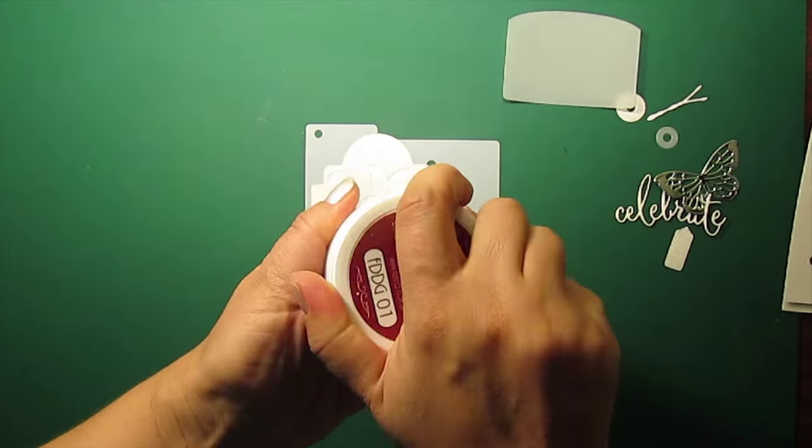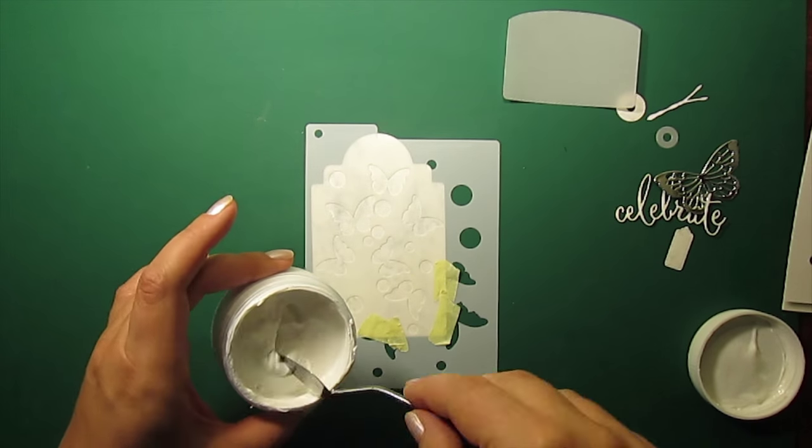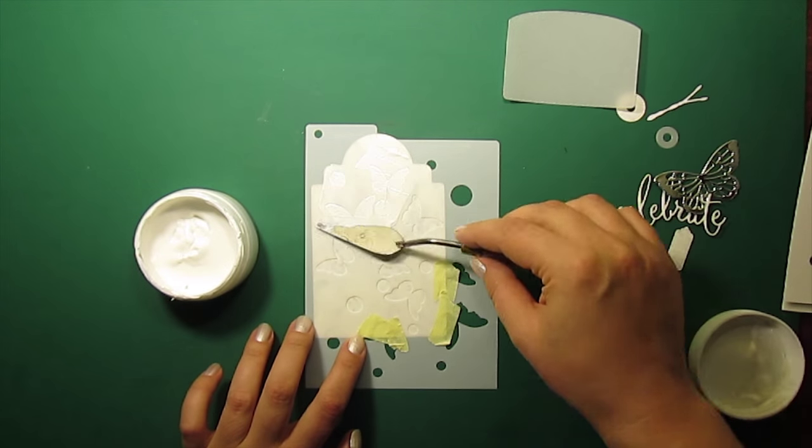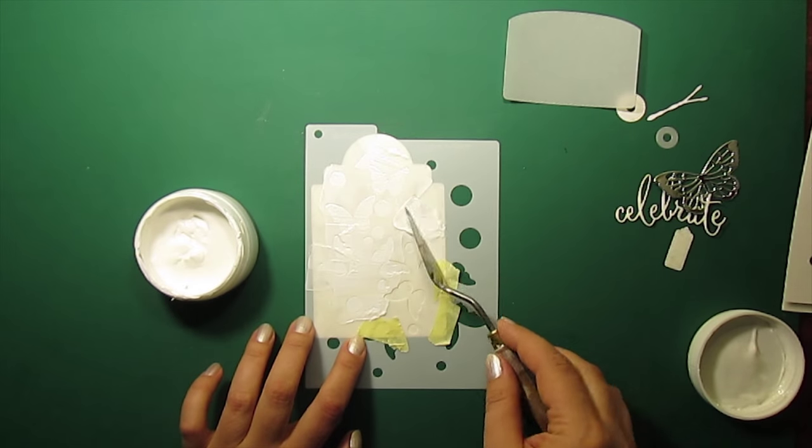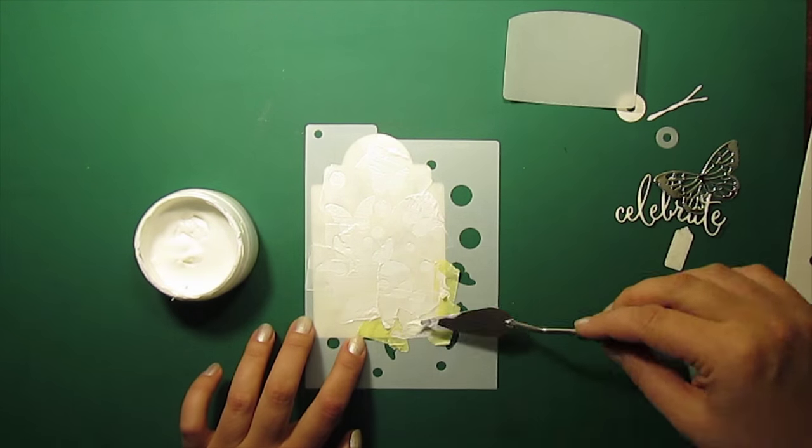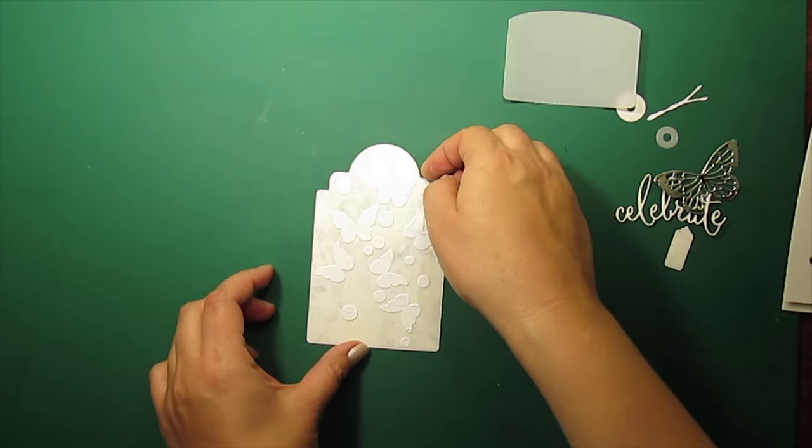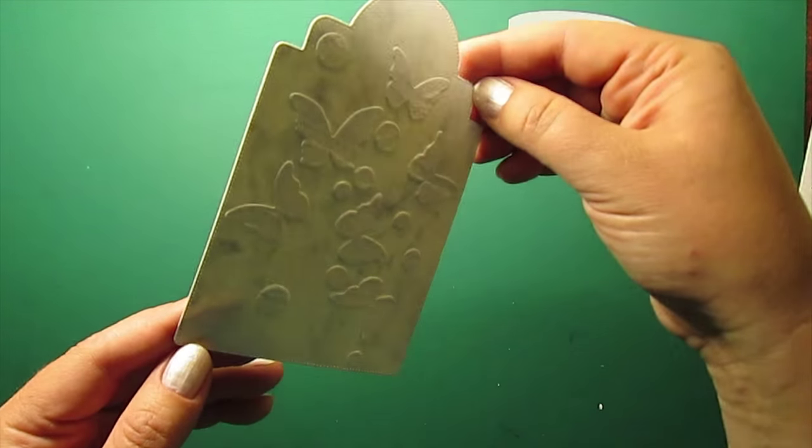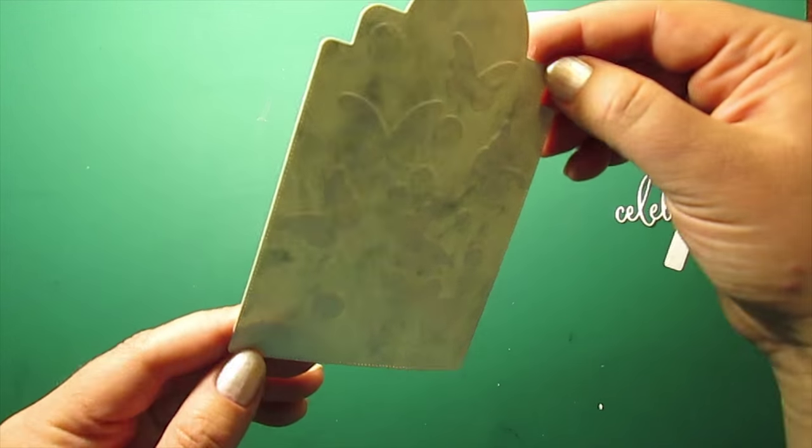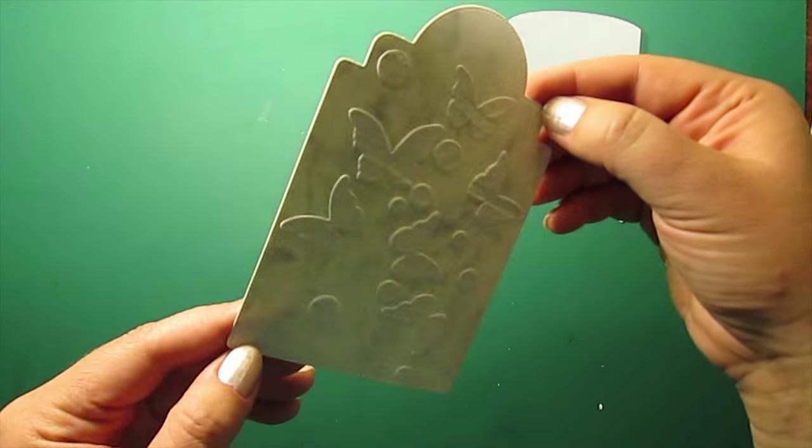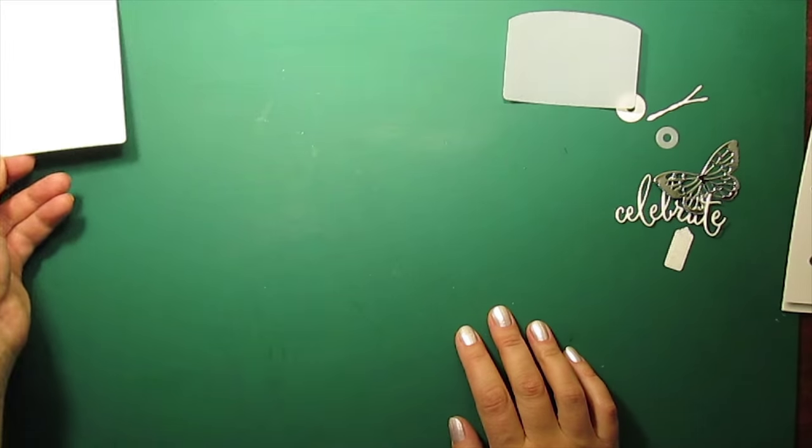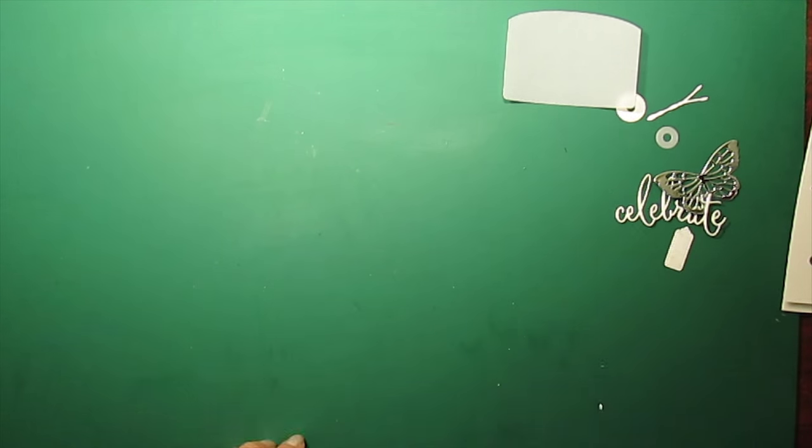I'm masking off the areas close to the edge because I want the Pinpoint edge to be completely clean. And now I'm applying some white glossy texture paste to make dimensional butterfly. I will set it aside to dry for a little while.